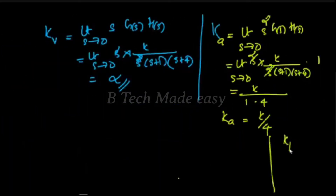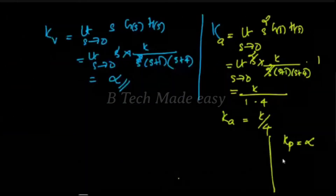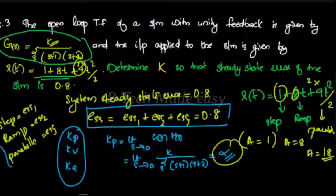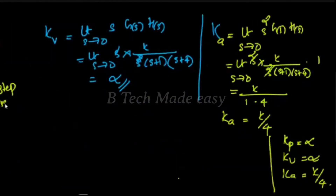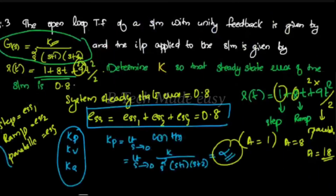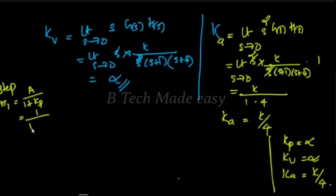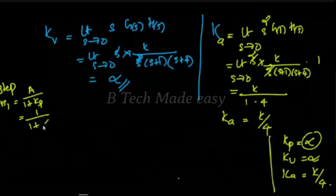So we have three position constant values: Kp is equal to infinity, Kv is equal to infinity, and Ka is equal to K by 4. We have to find the total ESS value. For ESS1: A divided by (1 plus Kp) equals 1 divided by (1 plus infinity), which equals 1 divided by infinity, which equals 0.